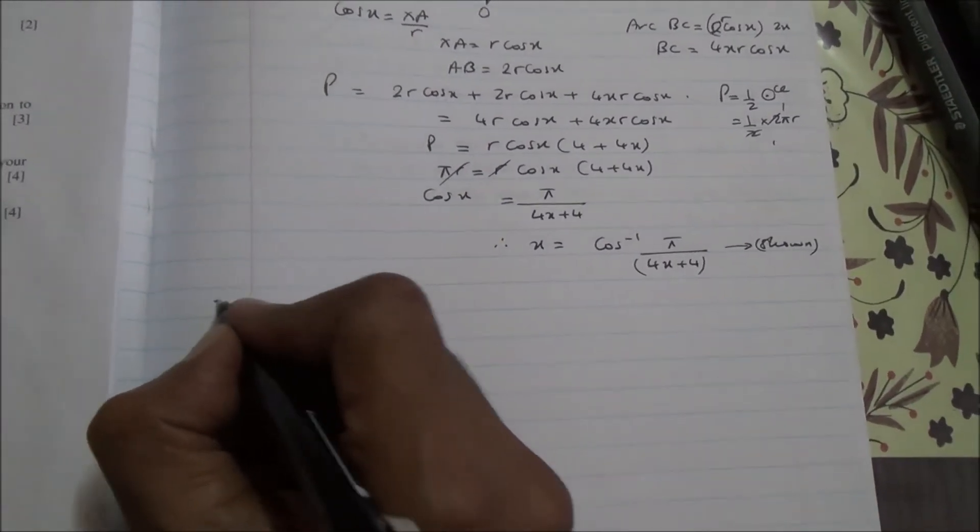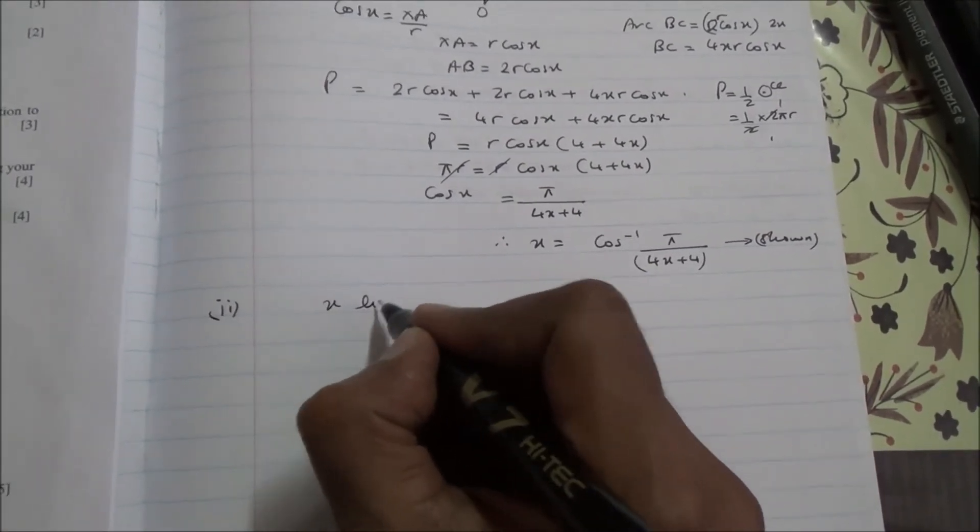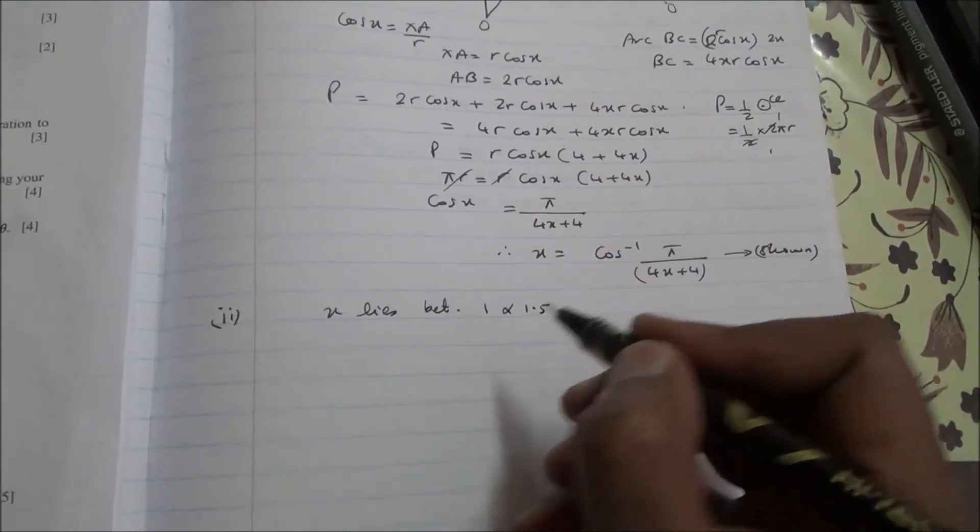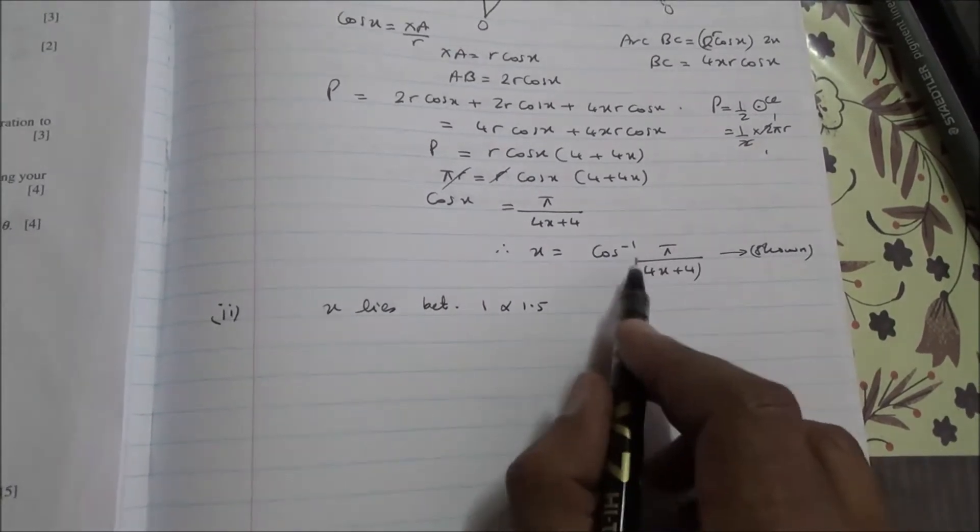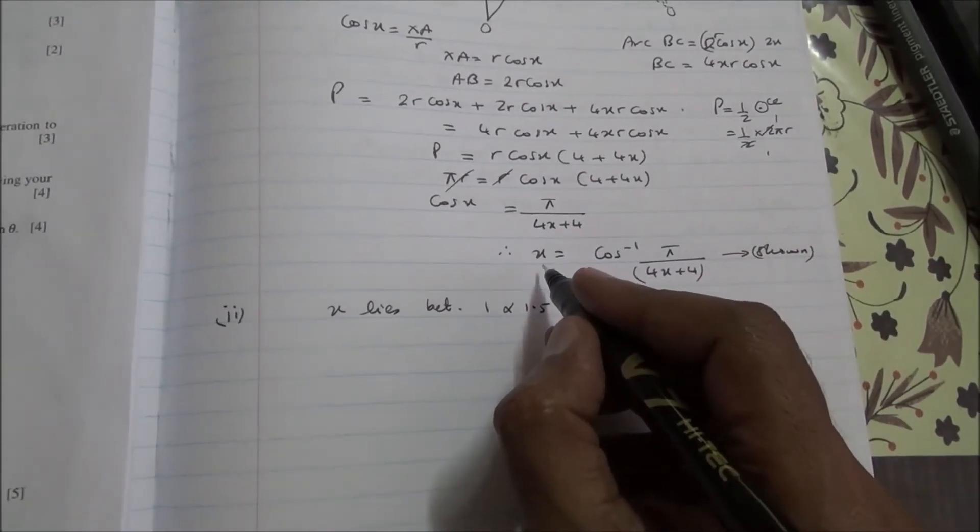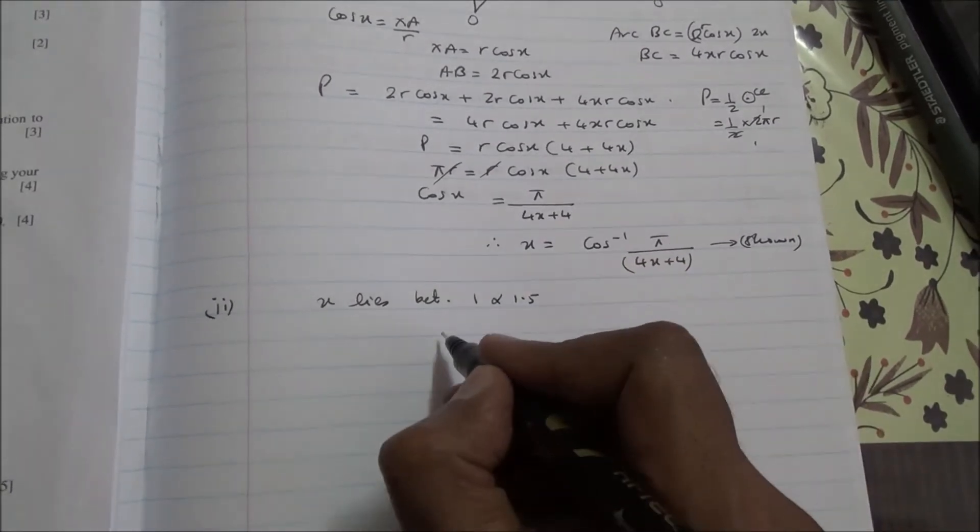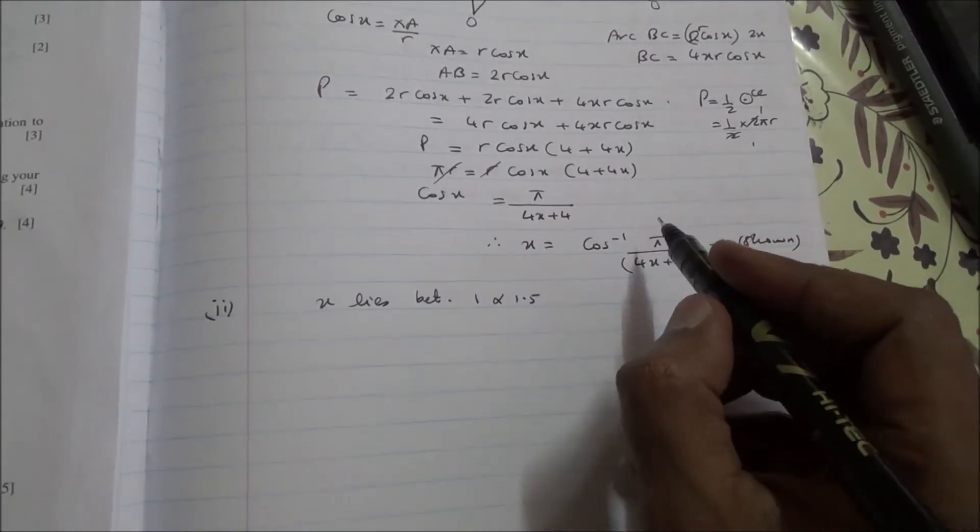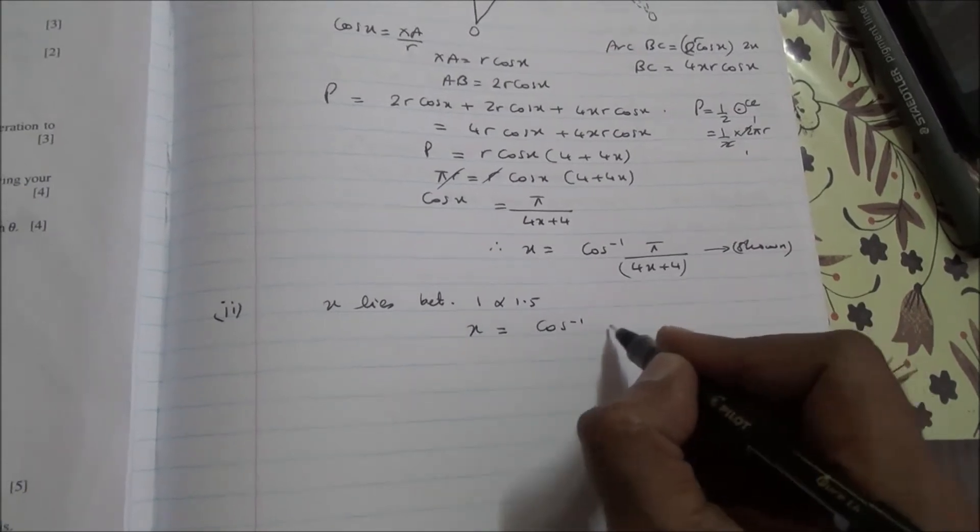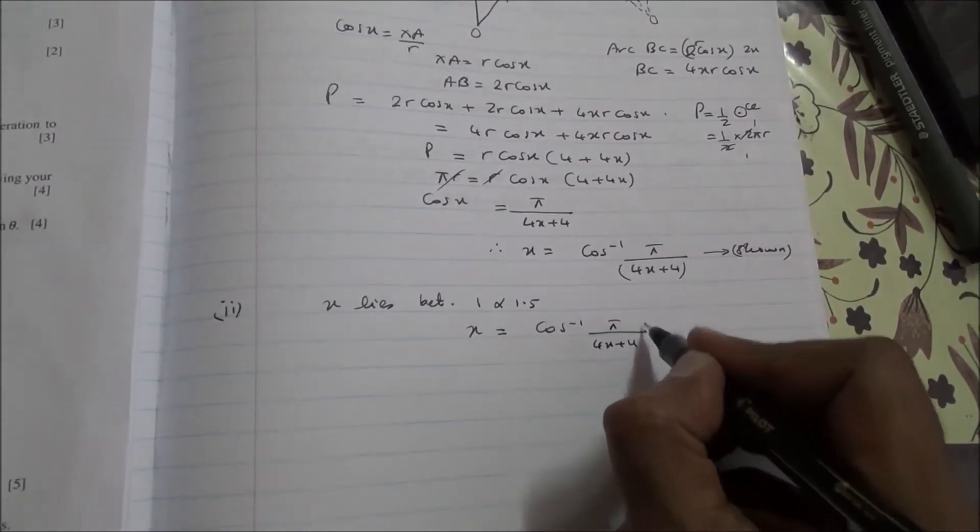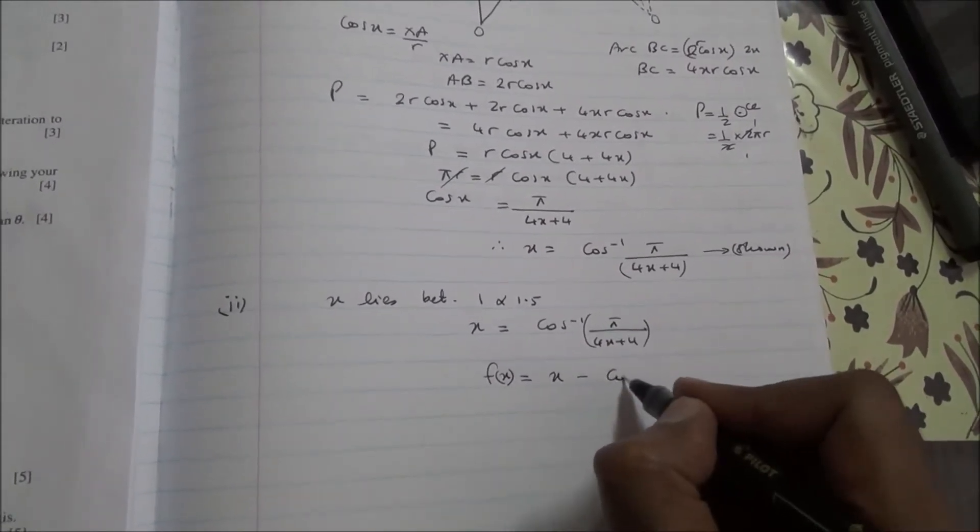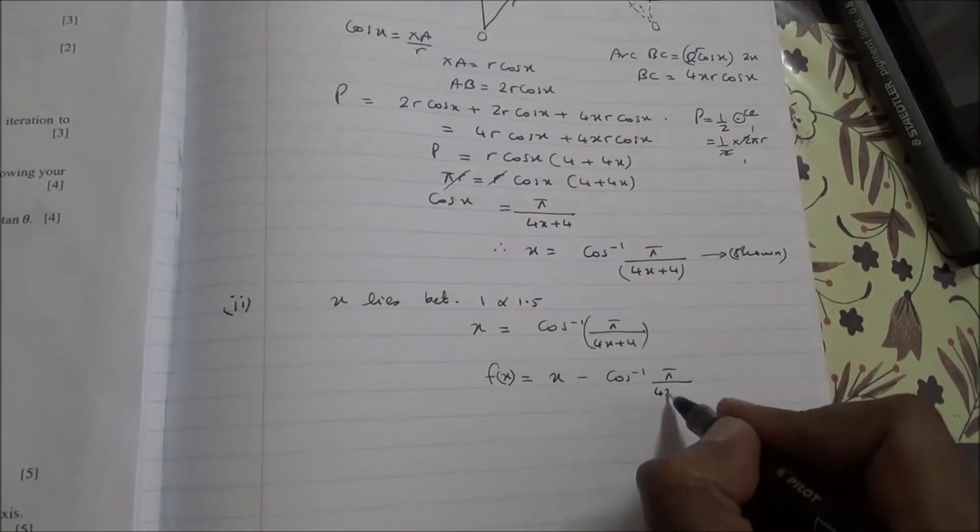For the second part, we are told to verify by calculation that X lies between 1 and 1.5. Now, this is the equation. So what we're going to do, I can send the cos on this side. So I have X is equal to inverse cos of π upon 4X plus 4. All of that can be written as F(X) is equal to X minus inverse cos of π upon 4X plus 4.